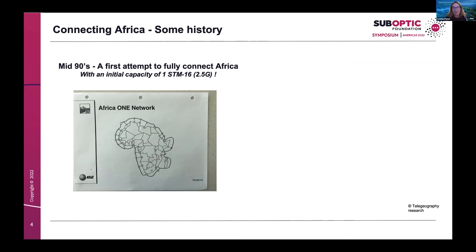That project never materialized — probably because it was too complex, too costly, and partnerships were not ready at the time. It presented a lot of challenges. But even if it didn't become a reality, Africa wasn't an area that remained under-connected. There were several initiatives to connect Africa — for example, on the west coast a cable called SAT-3, which has been serving the region for a long time.